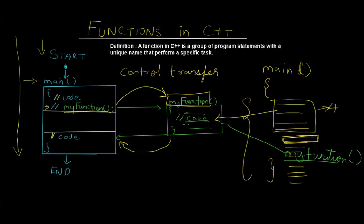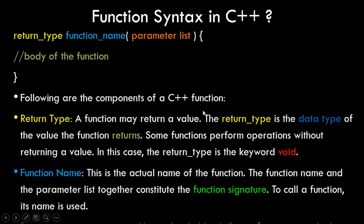Let's look at the syntax of functions. The first part is the return type, then we have the function name — the unique name we give our function — then we have a parameter list, and then opening and closing curly braces containing the body of the function. The entire first line — return type, function name, and parameter list — is known as the signature of the function. Everything from the opening to the closing curly brace is known as the body of the function.